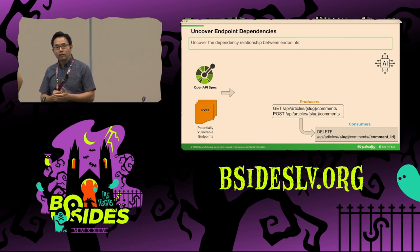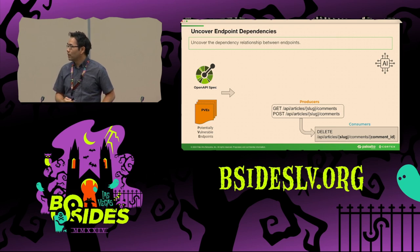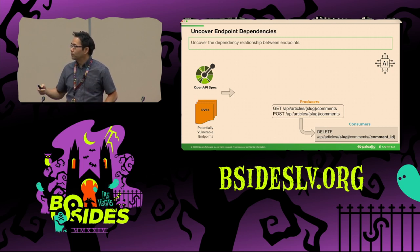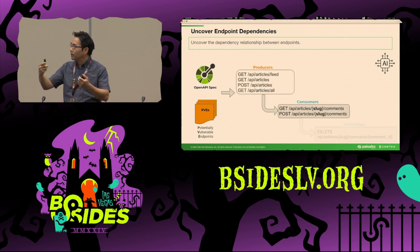Each endpoint can be a producer, a consumer, or both. For example, the consumer endpoint 'delete comment' has two required inputs — slug and comment ID — which can come from its producers, 'get comment' and 'post comment.' In turn, these two producers also have a required input, slug, which comes from their own producers.